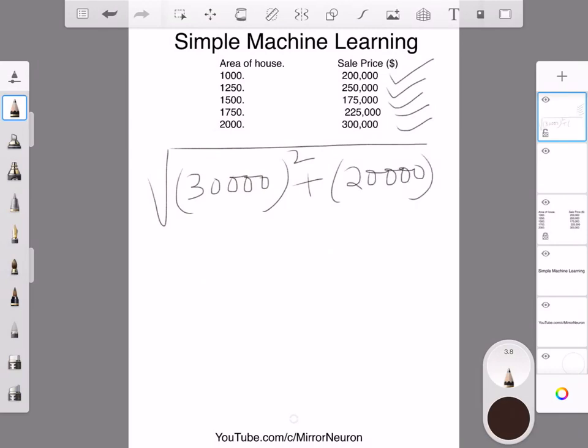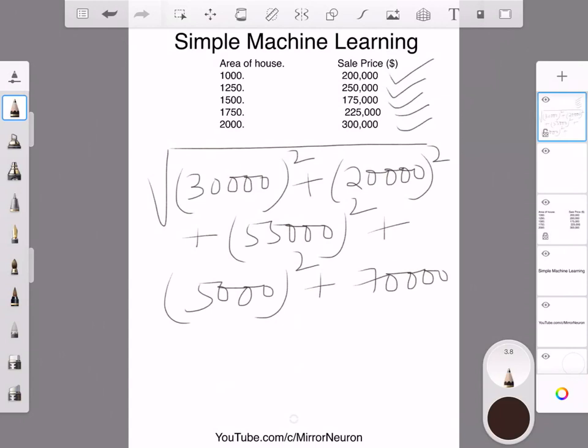Plus 175,000 minus 230 is 55,000 square, plus 225 minus 230 is 5,000 square, and 300,000 minus 230 is 70,000 square. And if I calculate and take the square root...